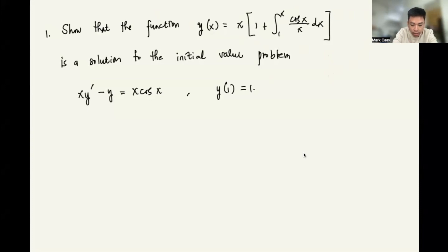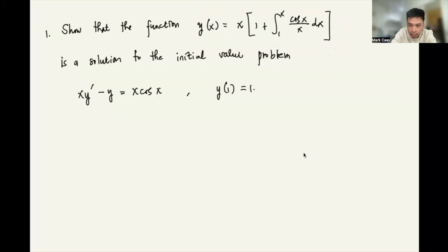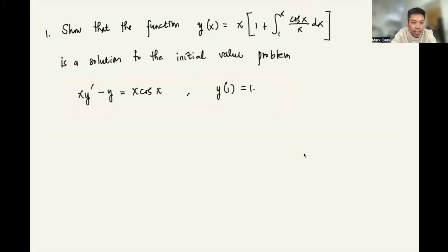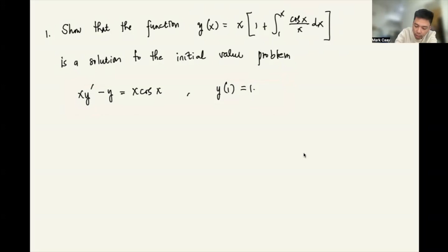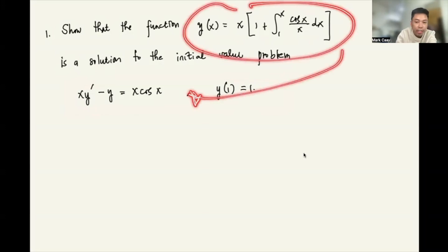Show that the function y(x) = x times (1 plus the integral of cosine(x)/x dx from 1 to x) is a solution to the initial value problem. This is our initial value problem: xy' minus y equals x·cosine(x).